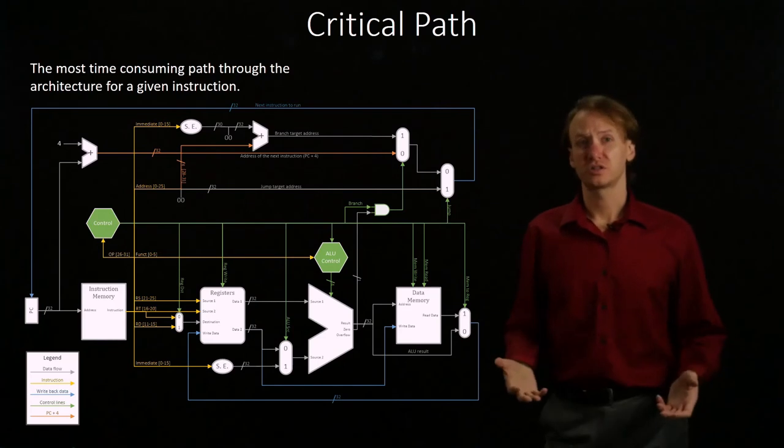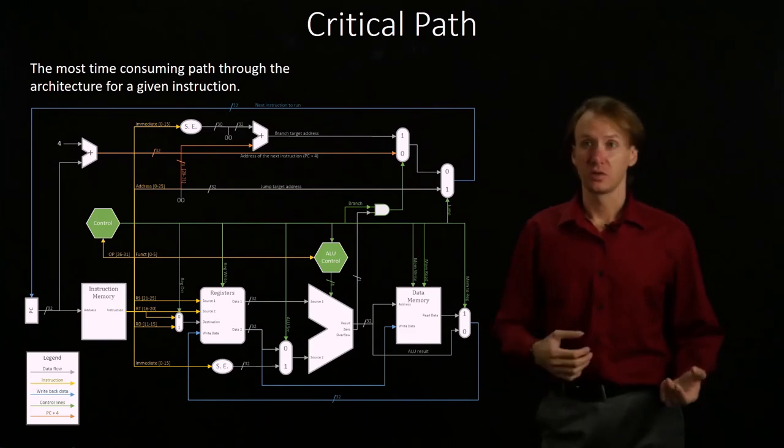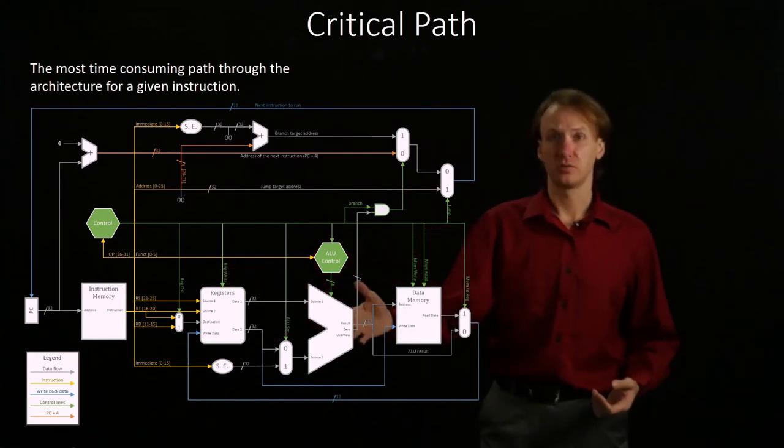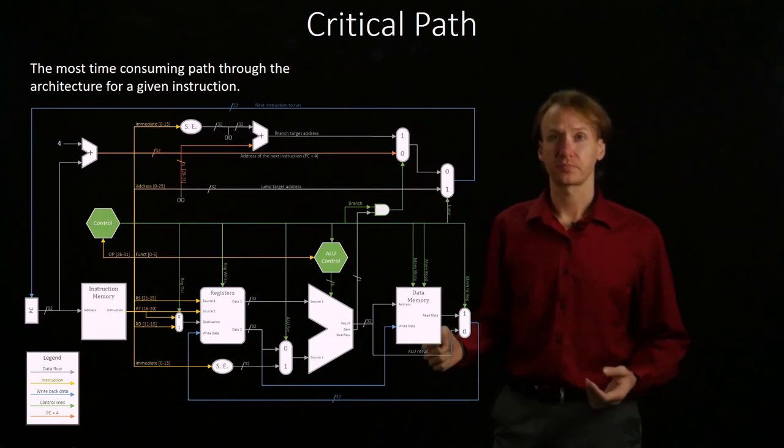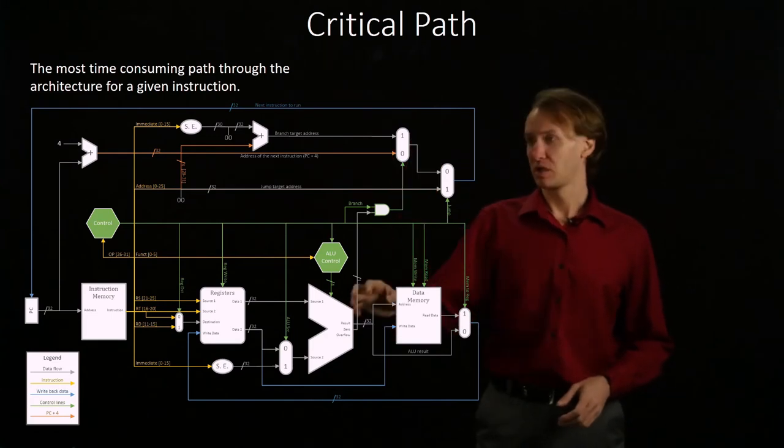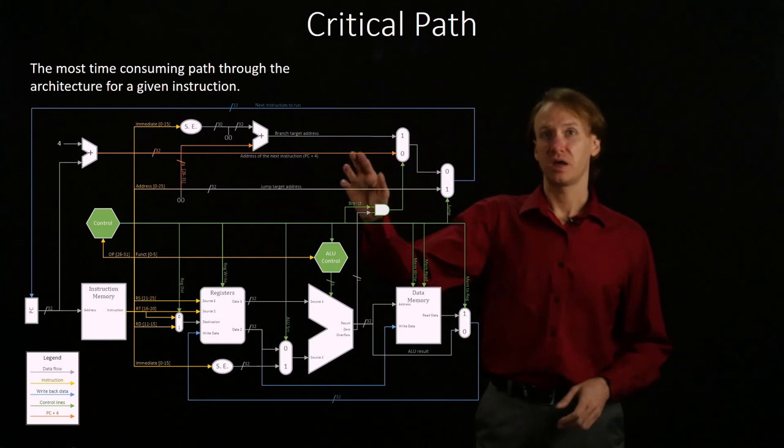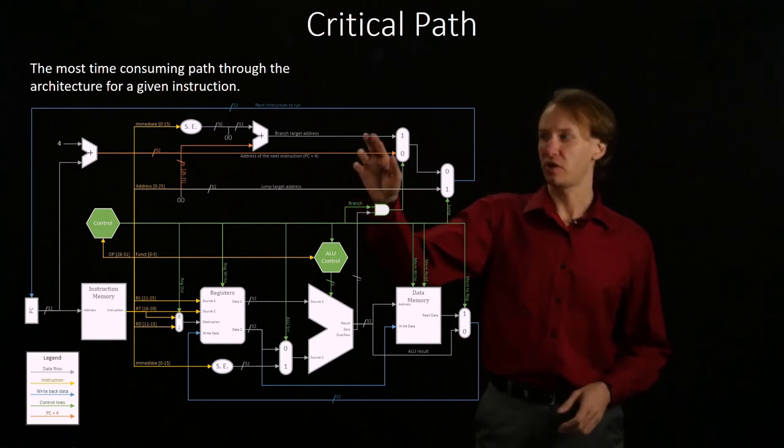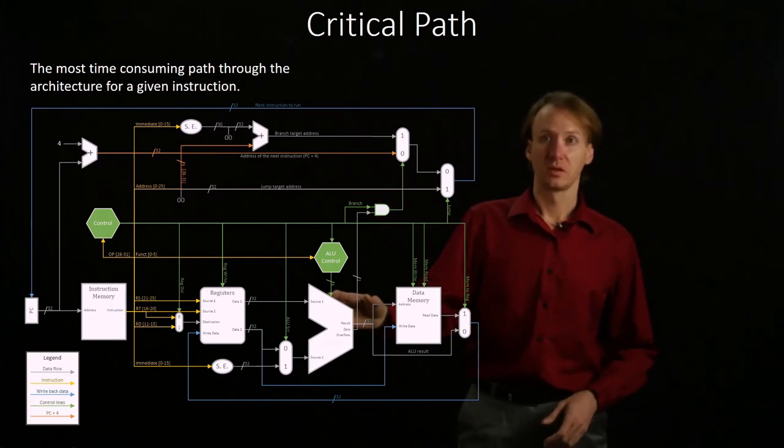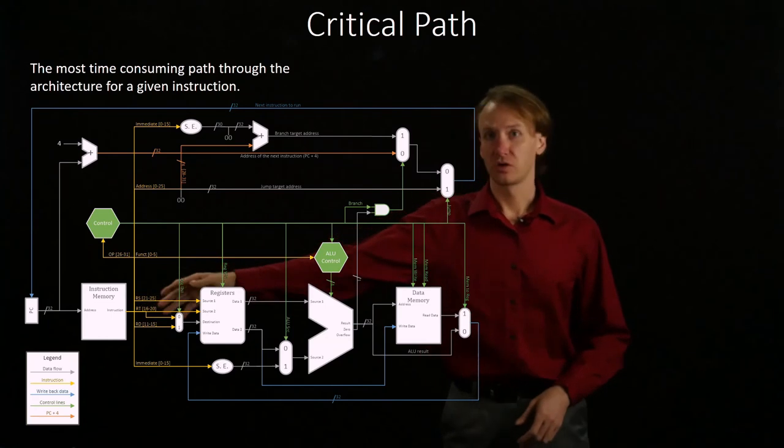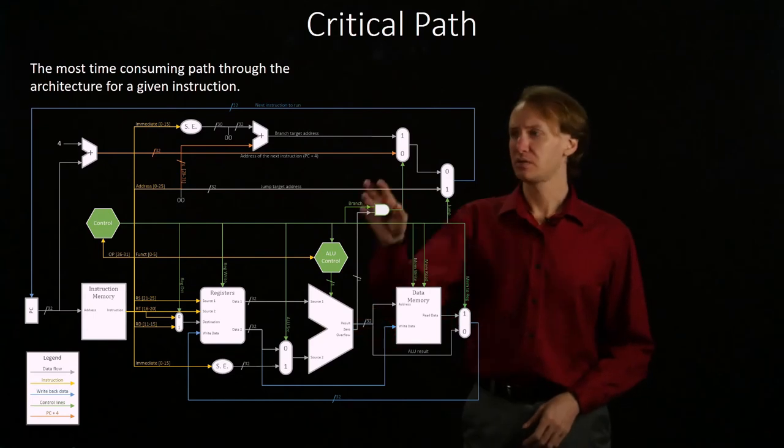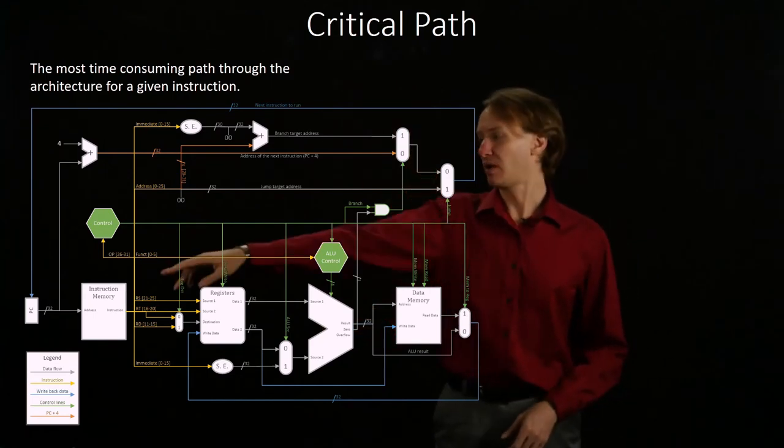The branch instruction is also sort of like an add instruction. We start with our program counter. We use the instruction memory, the registers, the ALU. We do some subtraction here. But this time we're interested in how we change the program counter. In order to decide whether we want to take the address of the next instruction or the address of our branch target instruction will depend on the results of the ALU. Now my critical path will involve going through the program counter, instruction memory, registers, ALU, and then the branch multiplexer, the jump multiplexer, and back to the program counter.